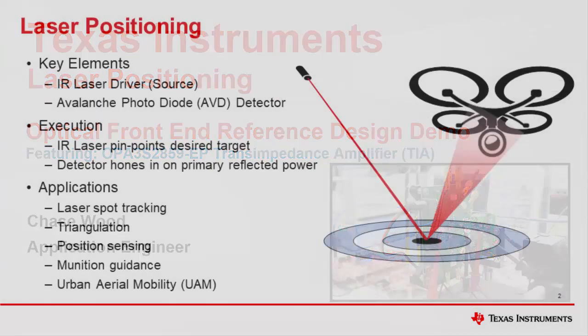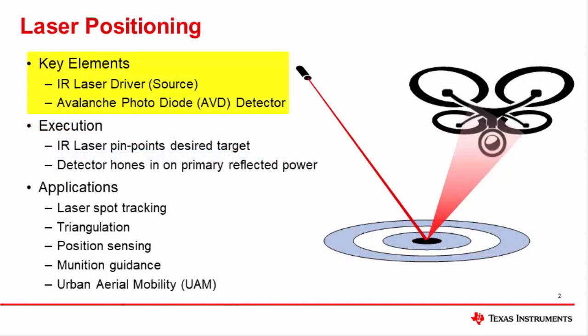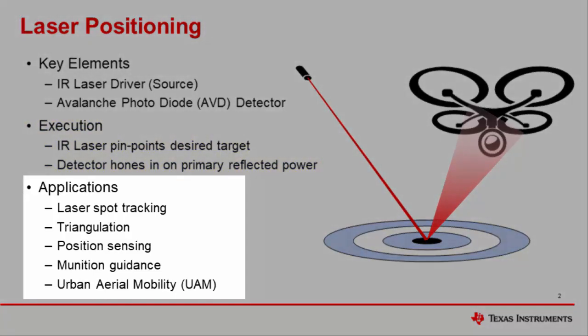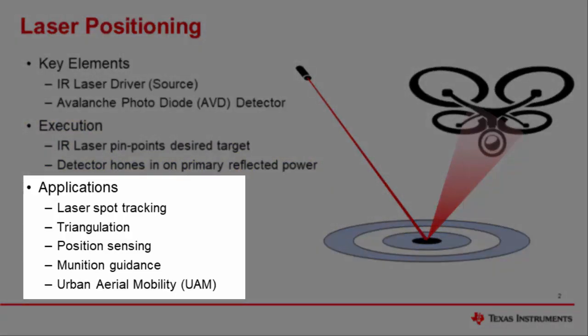The key optical elements in the laser positioning system are the infrared laser diode source and the avalanche photodiode detector. The infrared laser pinpoints the desired target. The detector aligns with the reflected power and allows the vehicle to hone in on the incident light. This system can be used in a variety of applications like spot tracking, triangulation, position sensing, munitions guidance, or unmanned UAV flight control.